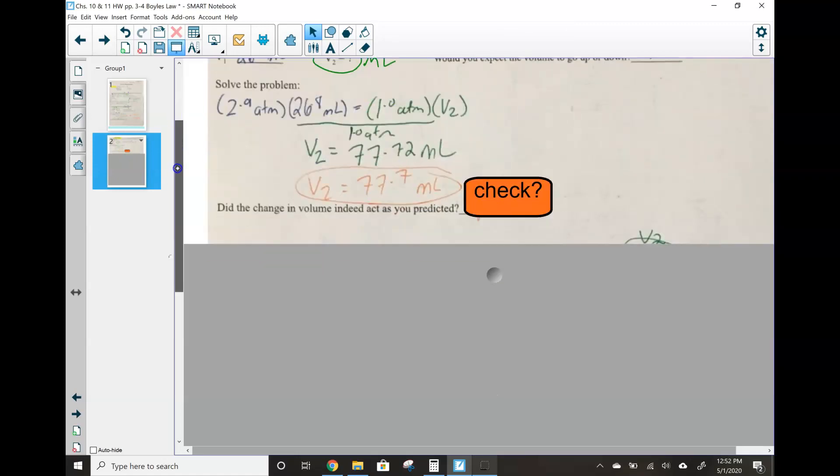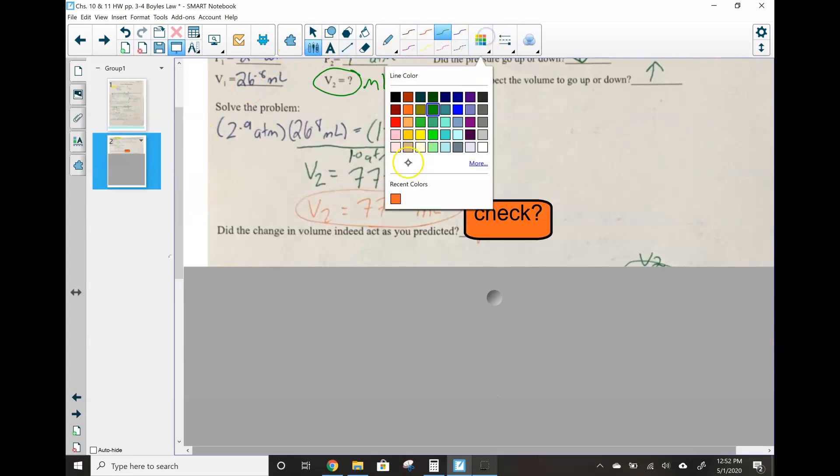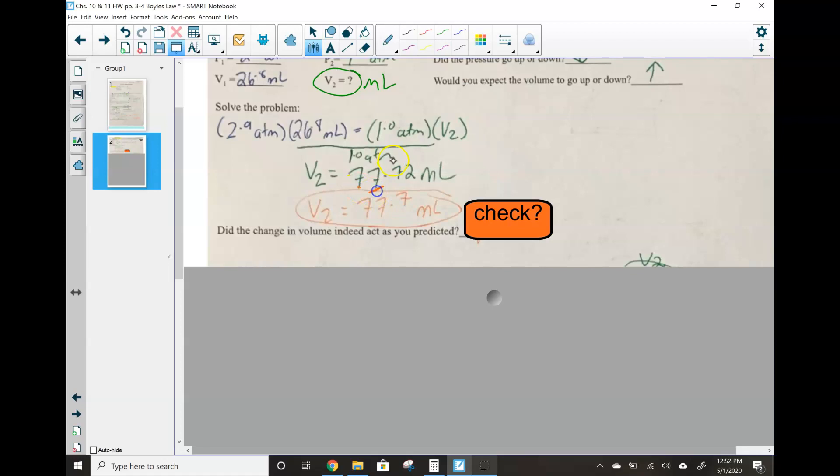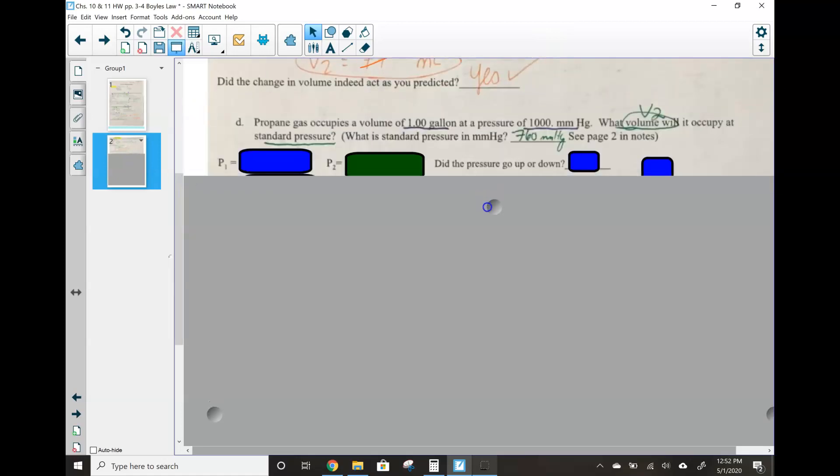So, hmm, uh-oh. Least number of sig figs is 2. That means this answer isn't right. Let's fix it. So if we need to have 2 sig figs, 1, 2. Look to the right. This should actually be 78 milliliters. Because we're multiplying and dividing, it's not least number of decimals. It's least total number of sig figs. So let's do a check here. Did it act as predicted? We expected volume to go up. We went from 26.8 to 78. Yes, we are all good there.